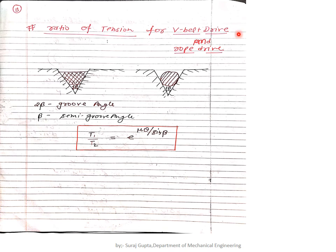For V-belt drive and rope drive, a groove is made on the pulley to prevent slipping. The groove angle is 2β, so β is the semi-groove angle. For rope drive, the cross-section of the rope is circular, so the groove angle is also 2β with β as the semi-groove angle. In these cases, the tension ratio becomes T₁/T₂ = e^(μθ/sin β). Note that θ must be in radians (not a trigonometric function) while β must be in degrees (as it is a trigonometric function).